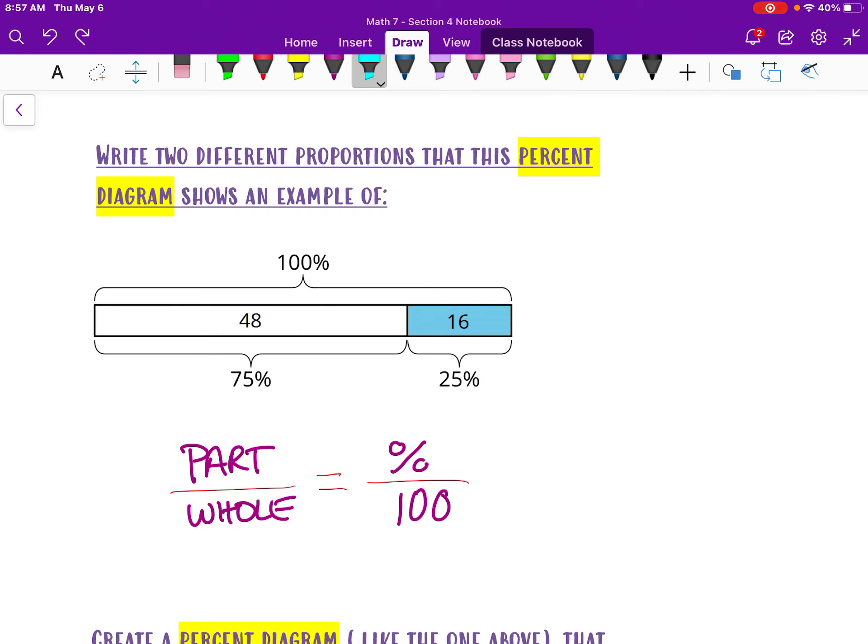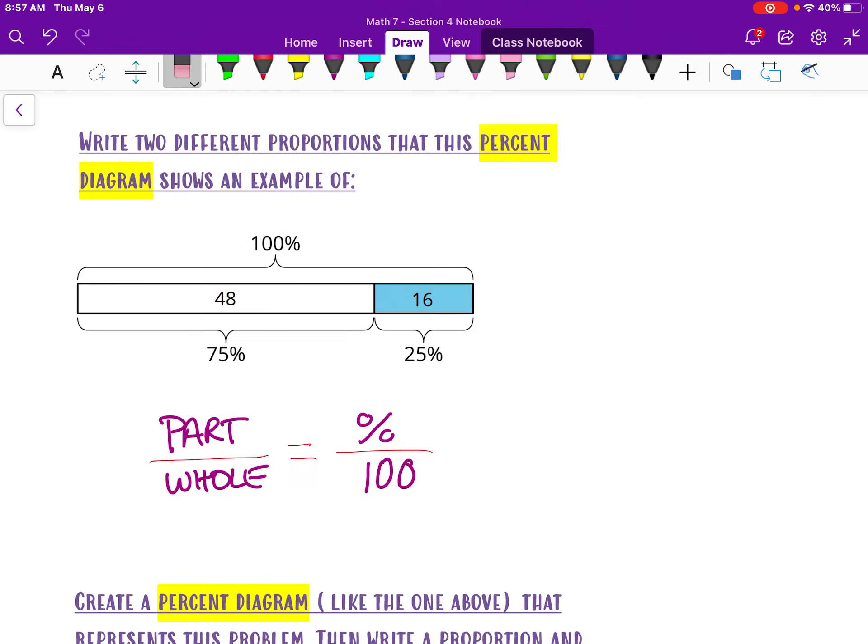And it says, this diagram is showing that the 48 is showing that that is 75% of the whole thing. And the 16 is showing that that's 25% of the whole thing.